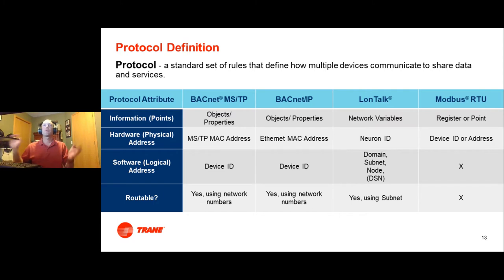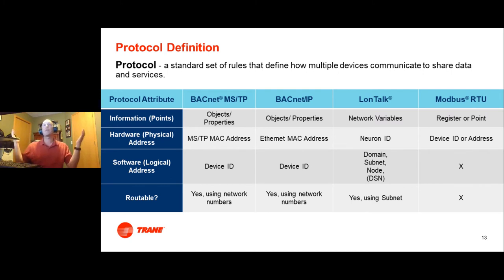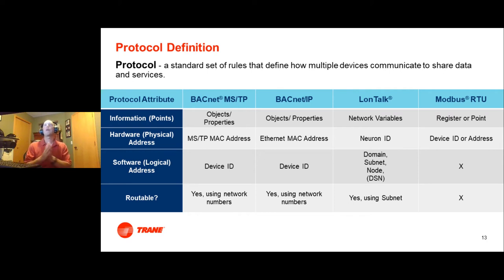A protocol, at a high level, is a way for two different controllers to communicate — hopefully between different vendors to help build our open system. Using a compressed version of the OSI seven-layer model, the really important thing when we talk about a BAS communications protocol is having a clear definition of the points, information, or data being shared. Every protocol may have a different name for it, but a good definition is critical, and that's what we can discuss as system integrators.